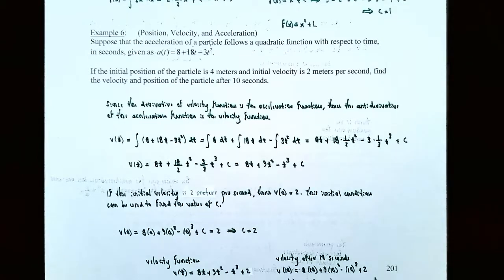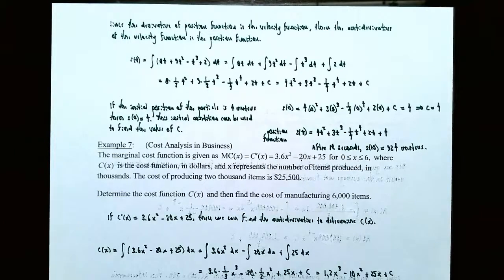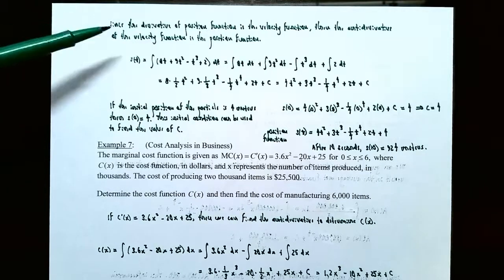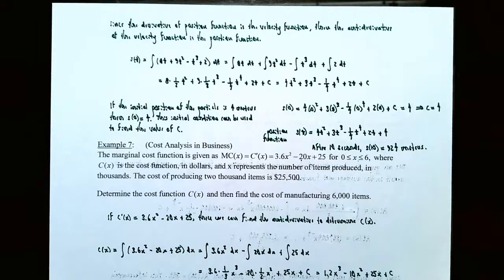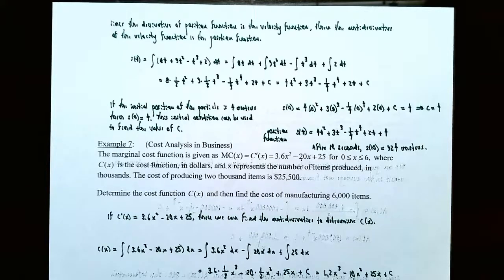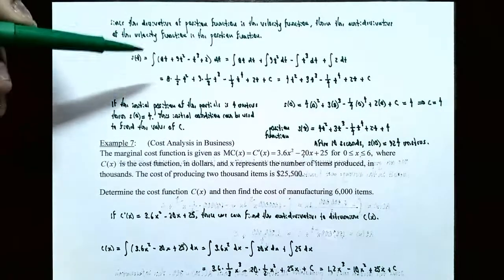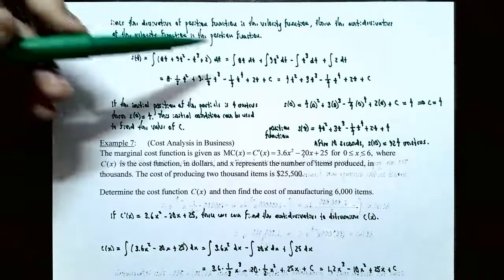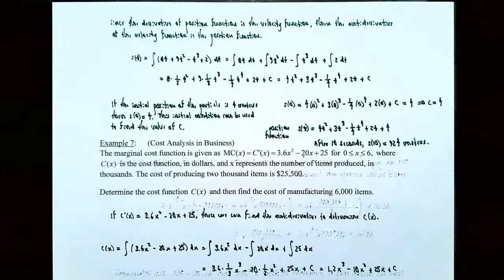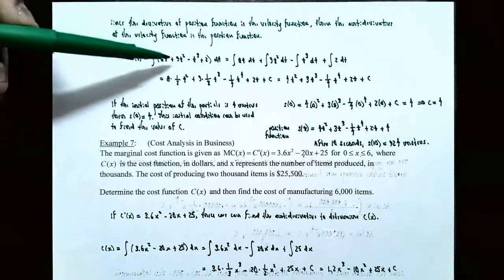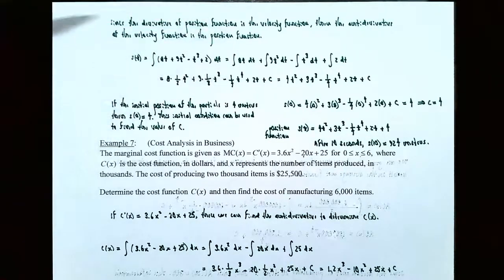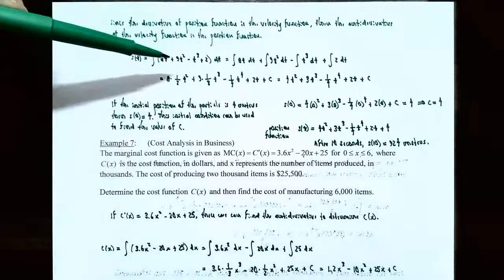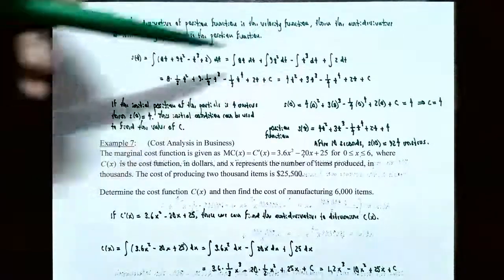We're not finished with this problem because they also asked for the position of the particle after 10 seconds. Notice that the derivative of the position function is the velocity function, so the antiderivative of the velocity function would be the position function. So s(t) = the integral of 8t + 9t² − t³ + 2 dt. We want to find the antiderivative of the velocity function, so find the antiderivative of each term separately — four different terms: integral of 8t dt, integral of 9t² dt, integral of t³ dt, and integral of 2 dt.